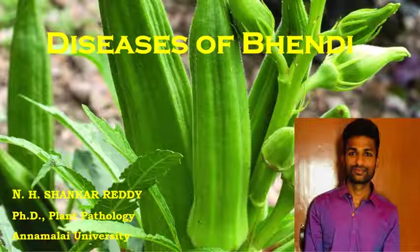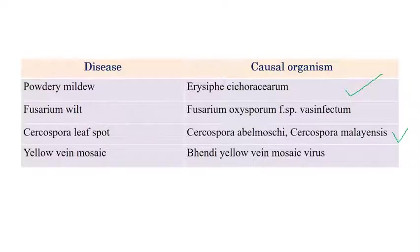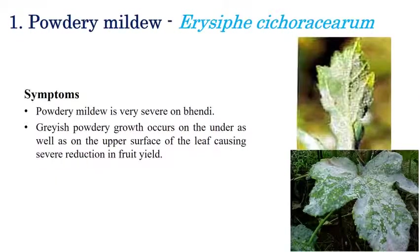We will now see the list of important diseases in bhindi. My name is NH Shankar Reddy and I am doing a PhD in Plant Pathology at Namal University. The diseases are: powdery mildew, caused by Erysiphe cichoracearum; Fusarium wilt, caused by Fusarium oxysporum f.sp. vasinfectum; Cercospora leaf spot, caused by Cercospora abelmoschi or Cercospora malayensis; and yellow vein mosaic, caused by Bhendi Yellow Vein Mosaic Virus. The first three are caused by fungal pathogens and the last one by a viral pathogen.